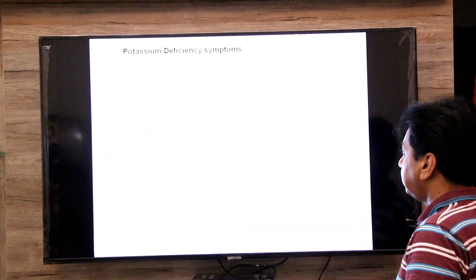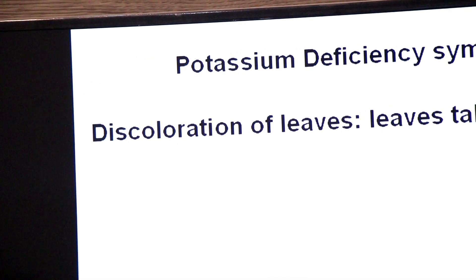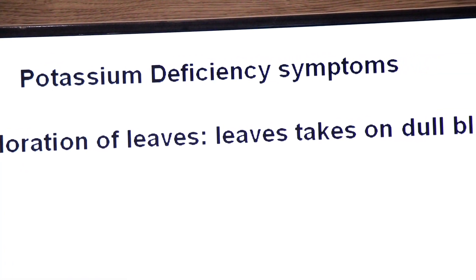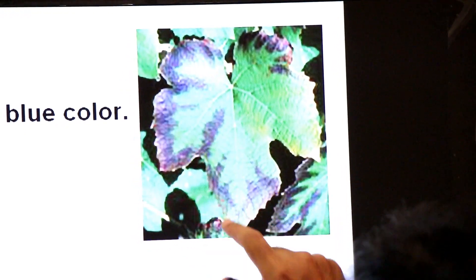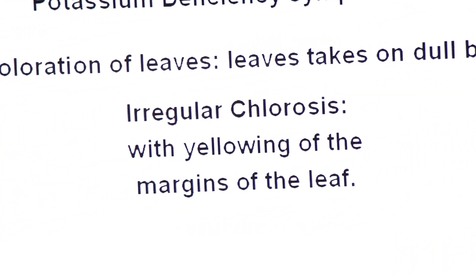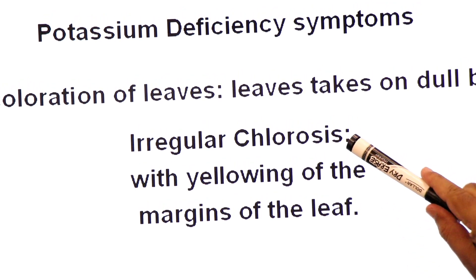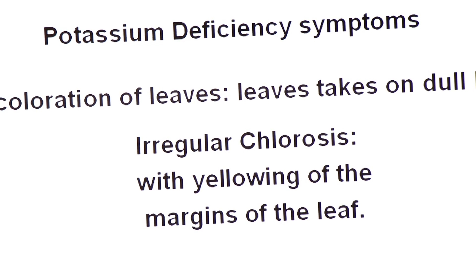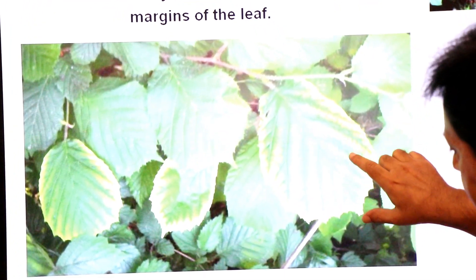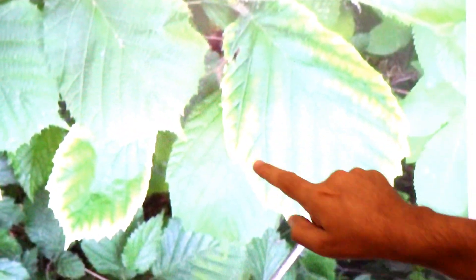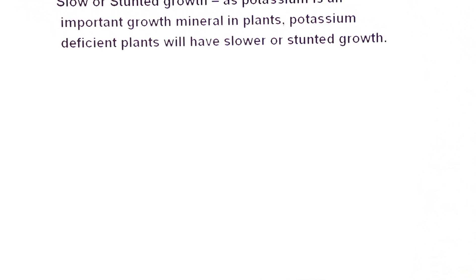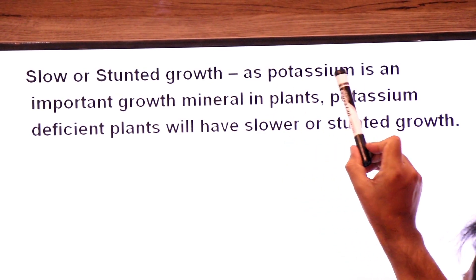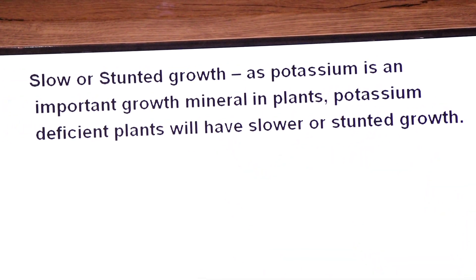Now we come to potassium deficiency symptoms. If there is a deficiency of potassium in the plant body, the effects are: first, discoloration of leaves — leaves turn a dull blue color, visible on the margins, due to potassium deficiency. Second, irregular chlorosis — loss of chlorophyll — with yellowing of margins on the leaves. This yellowing is called chlorosis, and when it occurs on the margins, it is called marginal chlorosis. Third, slow or stunted growth, as potassium ions are an important growth mineral for plants.